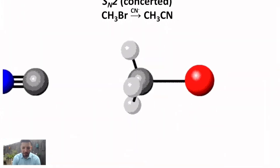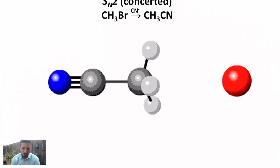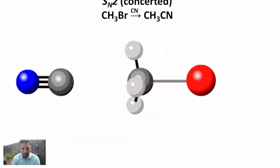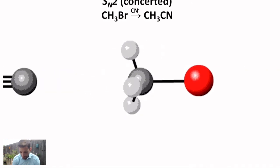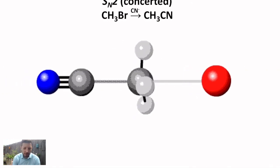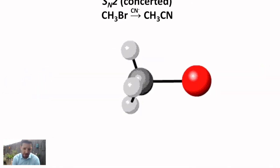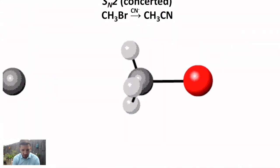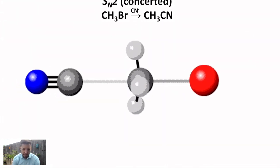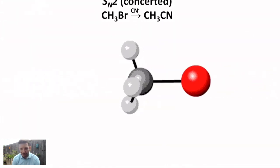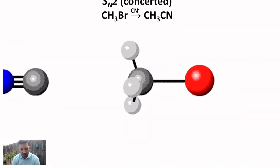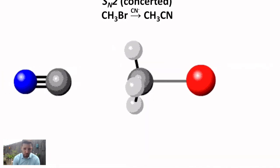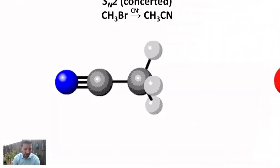Hey there chemists. In this lesson we're going to look specifically at one type of substitution reaction called the SN2 reaction. There's an animation of one on your screen right now, and there's a couple of things I want you to notice. Firstly, it's a concerted reaction. That means that the bond that breaks and the bond that forms is happening at the same time. It's all in one step. There's no intermediate.